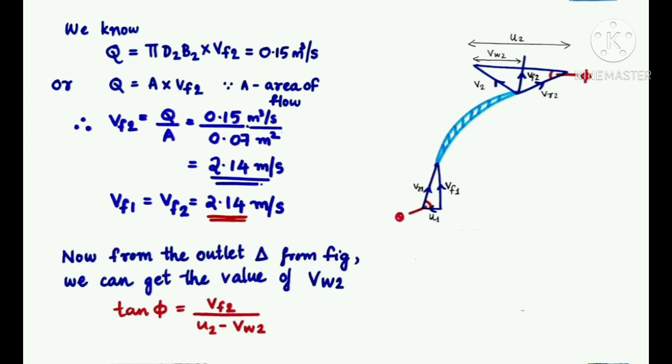Now, from the outlet triangle from figure 1, we can get the value of Vw2 which is the horizontal component of V2. From the figure, we can write tan φ = Vf2/(U2 - Vw2). We know the value of φ which is 35°, Vf2 which is 2.14 m/s, and U2 which is 15.75 m/s. Thus, rearranging, we get Vw2 as 12.65 m/s.